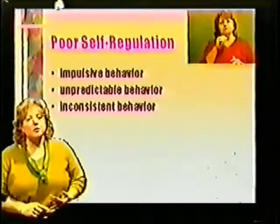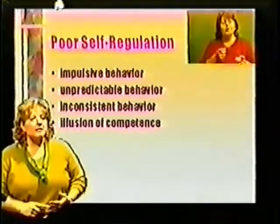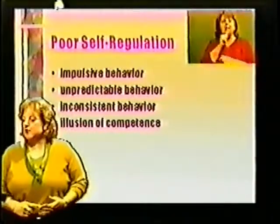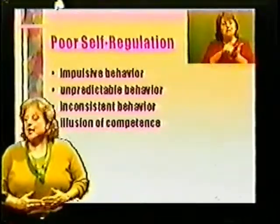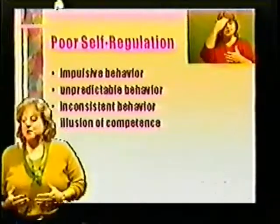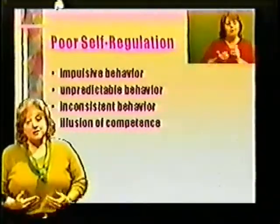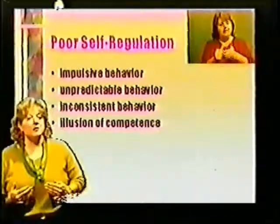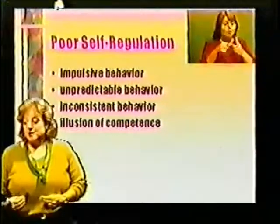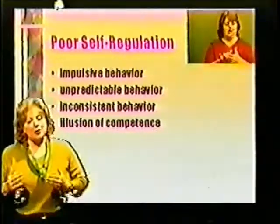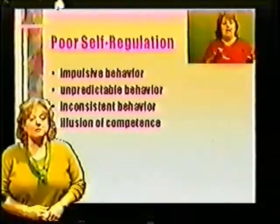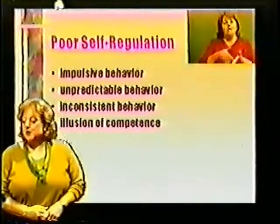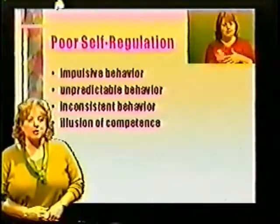Poor self-regulation can lead to impulsive behavior, unpredictable behavior, inconsistent behavior, and the illusion of competence. These are students who may be able to repeat the rules and say the right things they are supposed to do, but when it comes time to do it, they're not able to. This leads adults to believe the student can pay attention or control himself if he wants to and is choosing not to. They know what the rules are and can say them to you, but are not able to act on them when the time comes. These students often have a self-control that is approximately two-thirds of their chronological age.